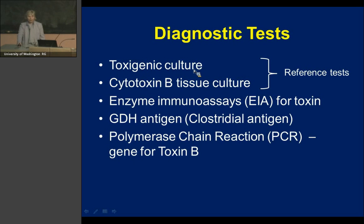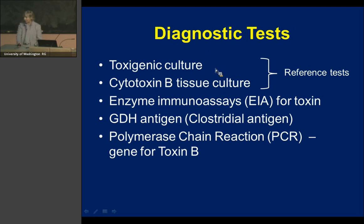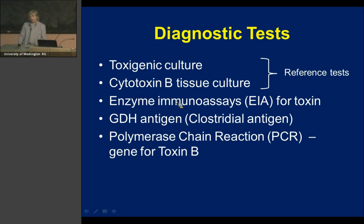The diagnostic tests to review: toxigenic culture — checking whether the organism actually produces toxin, since non-toxin-producing strains don't make you sick; and cytotoxin B in tissue culture, which was the old gold standard. Both take 24 to 48 hours for results, so they are useful as reference tests for microbiologists rather than for clinical decisions. Enzyme immunoassay tests were widely used in the 2000s; GDH antigen has been used as a screen; and PCR detects the gene for toxin B.